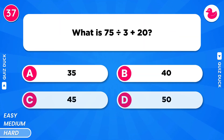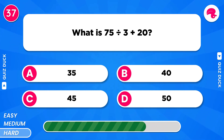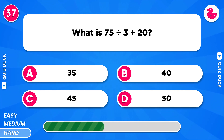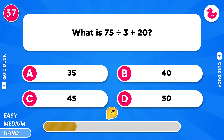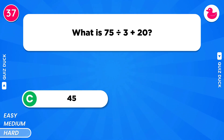What is 75 divided by 3 plus 20? The result is 45.